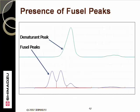This slide shows a comparison of a denatured ethanol sample on the bottom with just denaturant on the top chromatogram. It is clear to see that the denatured ethanol sample in the same area of the analysis has more peaks present than the denaturant. In this case, the ethanol distillate is providing fusel content which is being counted as denaturant.